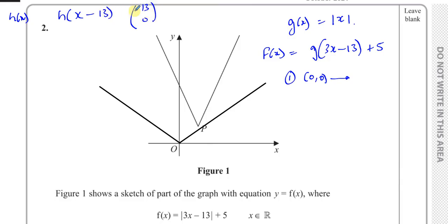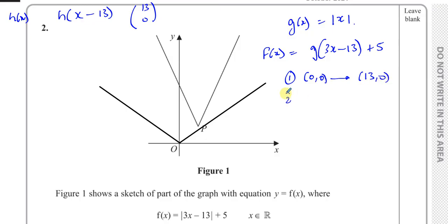If I have a function h of x minus 13, compared to h of x, you have to translate 13 spaces to the right. So there's a horizontal translation of 13 units to the right. After this first transformation from the minus 13 part, the vertex moves to the point 13, 0. The x coordinates get 13 added to them and the y coordinates remain untouched.